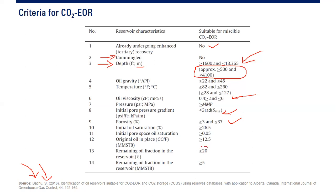The thirteenth criterion is remaining oil saturation in the reservoir, which should be greater than 20%. This is almost always achievable: even with strong water influx you may recover only 30%, and even after a good waterflood the recovery factor is typically 30–50%, meaning 50% or more of the oil remains — so remaining oil saturation above 20% is nearly always met.